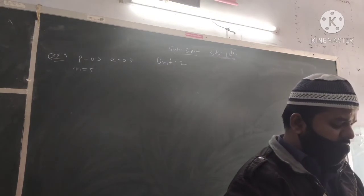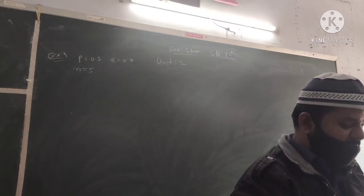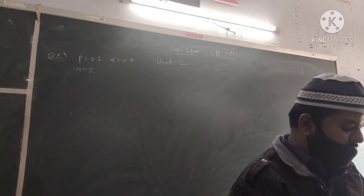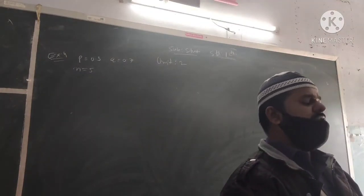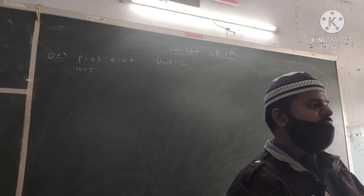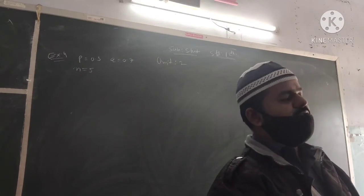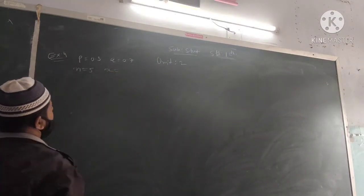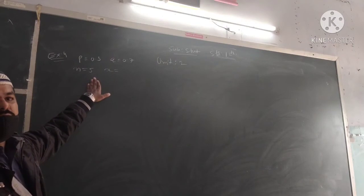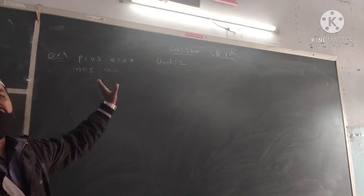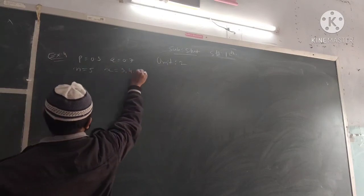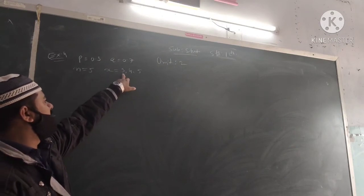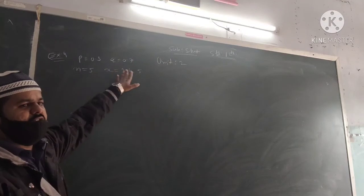Find the probability of the event that the number of students admitted to the engineering branch is more than the number of students who did not get admission to the engineering branch. So what would be the values? 5 students, so it will be 3, 4, 5. So X equals 3, 4, or 5.